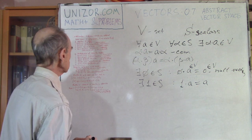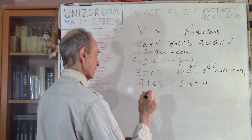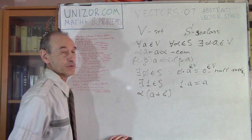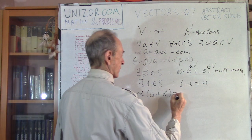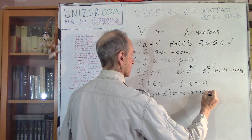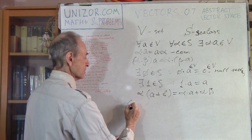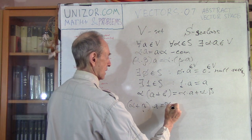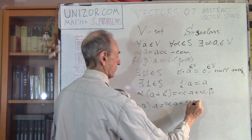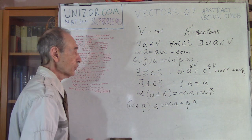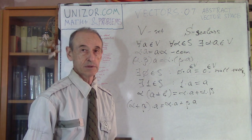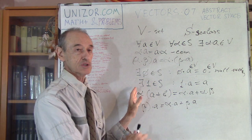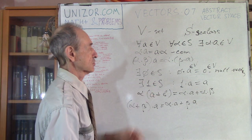There is also a distributive law — very important. There is a distributive law with respect to the sum of two different vectors: alpha times (A plus B) equals alpha times A plus alpha times B. And there is a distributive law with respect to two scalars: (alpha plus beta) times A equals alpha times A plus beta times A. All these properties we postulate — we assume that the vector set and the scalar set have all the properties about addition and multiplication by scalar.